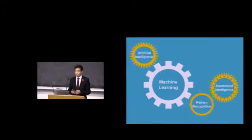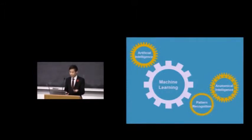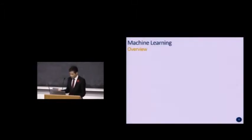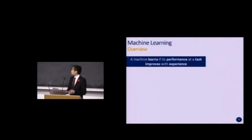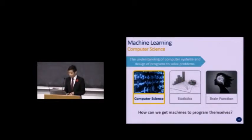Machine learning is one branch of artificial intelligence that focuses on how we can develop systems to learn how to solve problems on their own. To contrast this, think of a calculator — it can solve complex mathematical functions, but the more you use it, it doesn't improve. The field of machine learning is really the intersection of computer science, statistics, and brain function. In computer science, it's the study of how computers work and how we can develop programs to solve complicated problems.